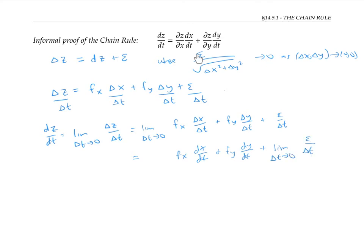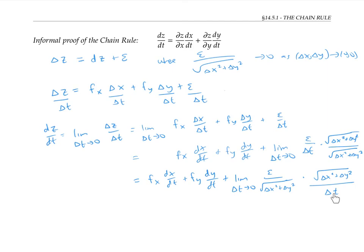Since I know that epsilon over the square root of delta x squared plus delta y squared is going to be heading towards zero, I'm going to multiply the numerator and denominator of this expression by delta x squared plus delta y squared. I'll rearrange my limit, and now I'll pull the delta t inside the square root sign.